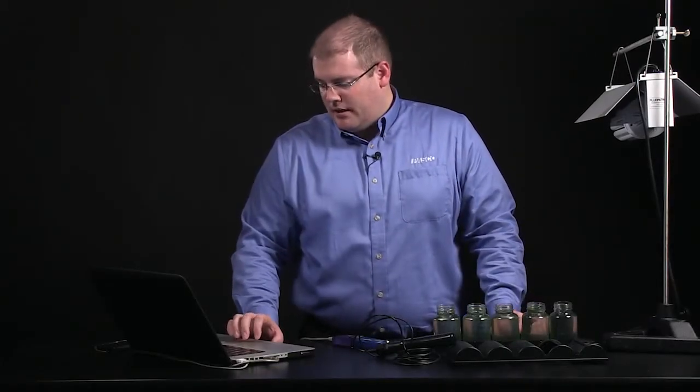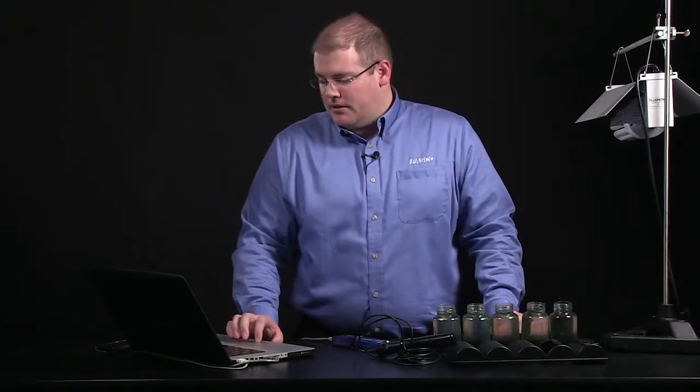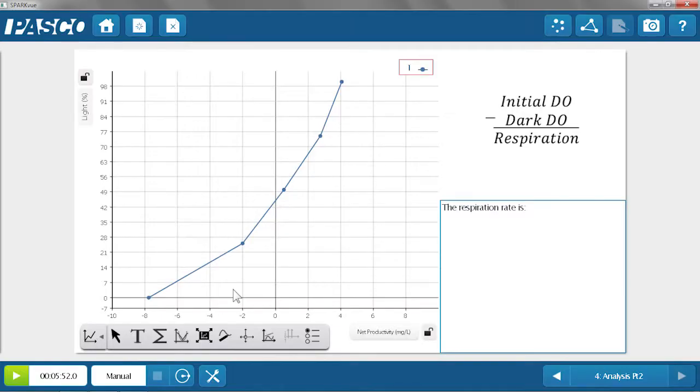Now we'll proceed to the second step of analysis where we'll calculate the respiration rate and we'll be able to see how the percentage of light that was getting to each bottle affected the net primary productivity. As you can see in the graph here, as more light was available to the chlorella, the primary productivity went up considerably.